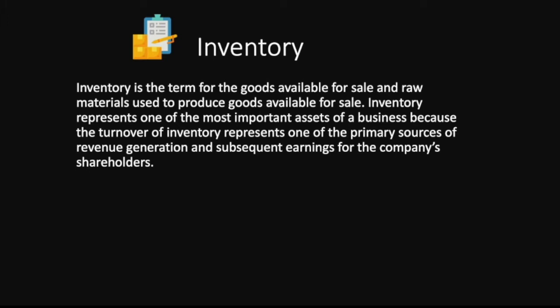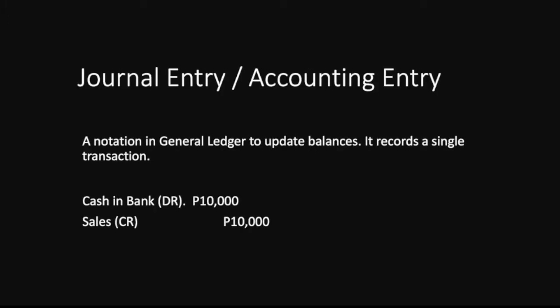Inventory is the term for goods available for sale and raw materials used to produce goods available for sale. Inventory represents one of the most important assets of a business, as inventory turnover is a primary source of revenue generation and earnings for company shareholders. We book inventory every time we acquire or purchase goods from suppliers — merchandise or raw materials to produce finished goods — and the value depends on the purchase cost from the supplier.